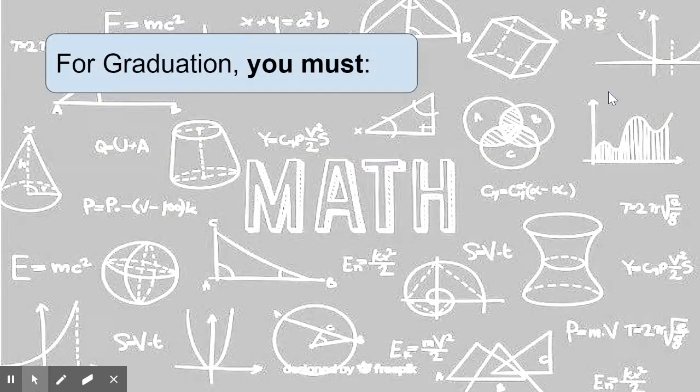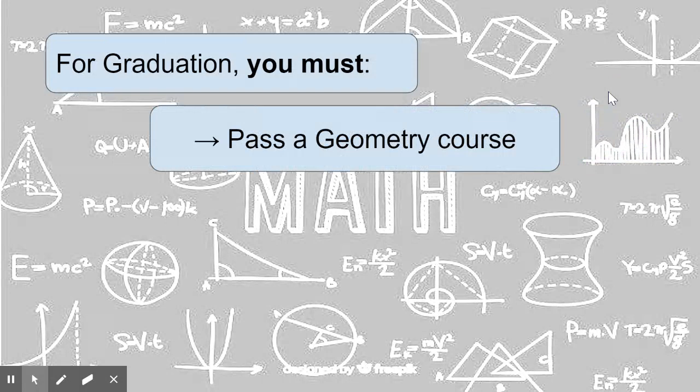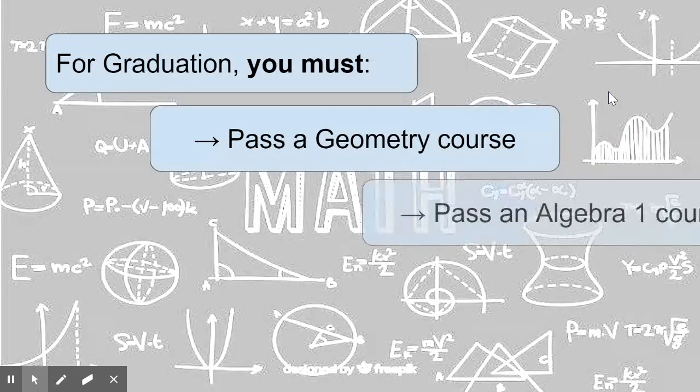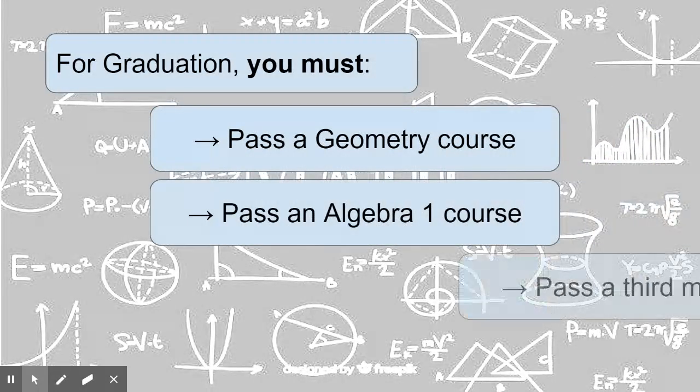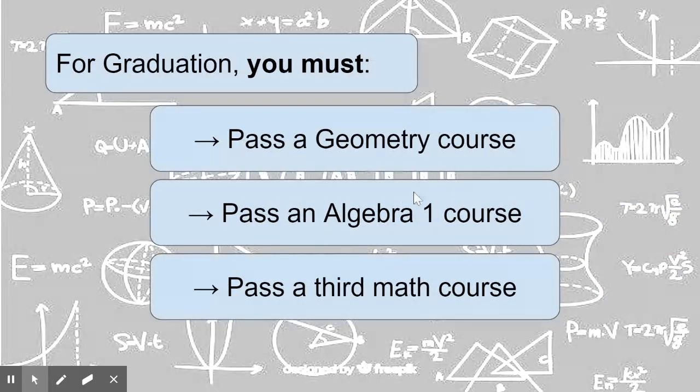To graduate from high school, you must do three things. You must pass a Geometry course, pass an Algebra 1 course, and pass a third math course. You're working on passing the Algebra 1 course right now, so you're in great shape.